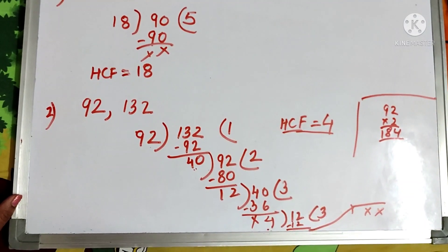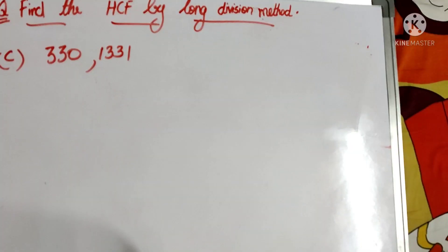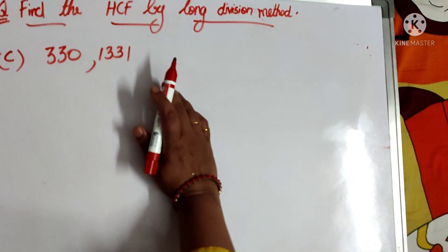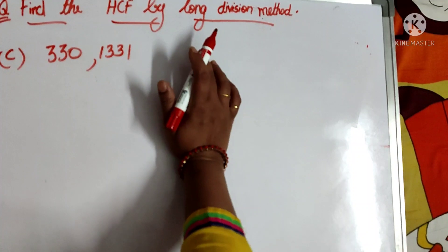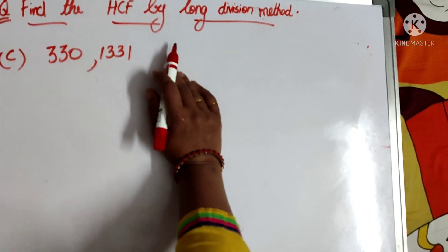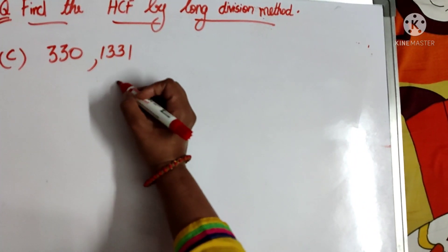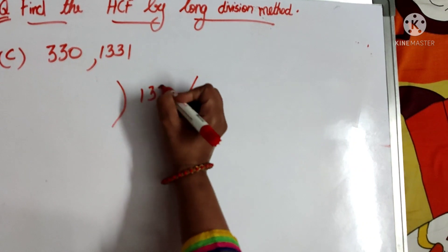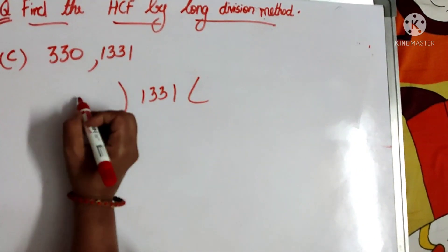In this way we solve. Now let us solve one more example: find the HCF of 330 and 1331 by long division method. First we divide 1331 by 330.